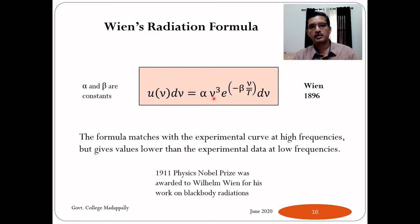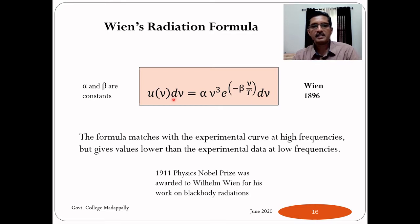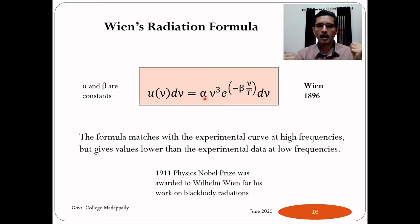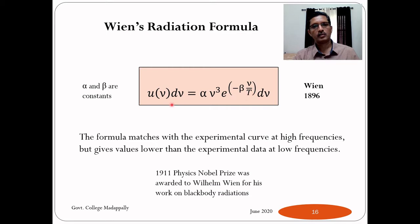In Wien's radiation formula, this energy density depends on frequency and temperature as: u(ν)dν = α·ν³·e^(−β·ν/T)·dν, where α and β are two constants, ν is the frequency, and T is the absolute temperature of the black body. There is a direct proportionality with ν³ and an exponential dependence on ν and T.